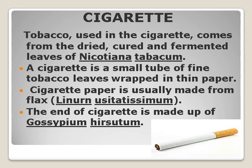Cigarette. Tobacco used in the cigarette comes from the dried, cured and fermented leaves of Nicotiana tabacum. A cigarette is a small tube of fine tobacco leaves wrapped in thin paper. Cigarette paper is usually made from flax liner. The end of a cigarette is made up of Gossypium hirsutum.